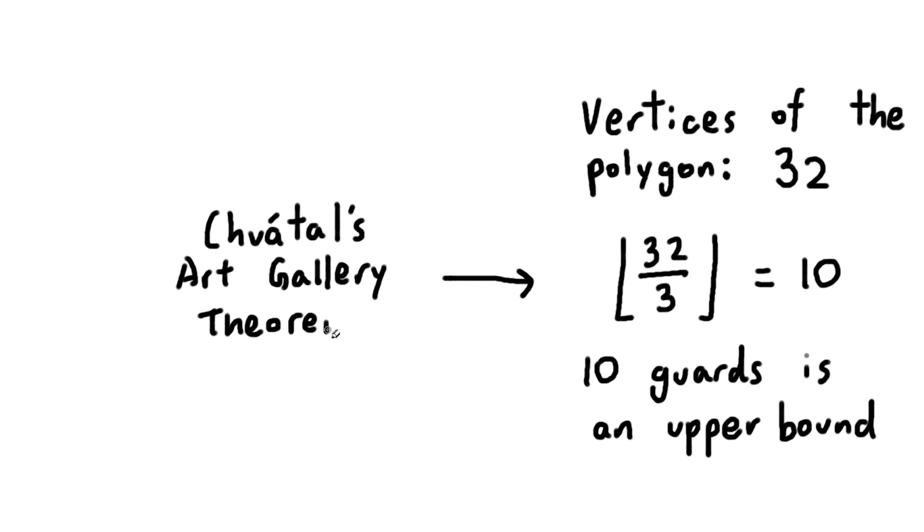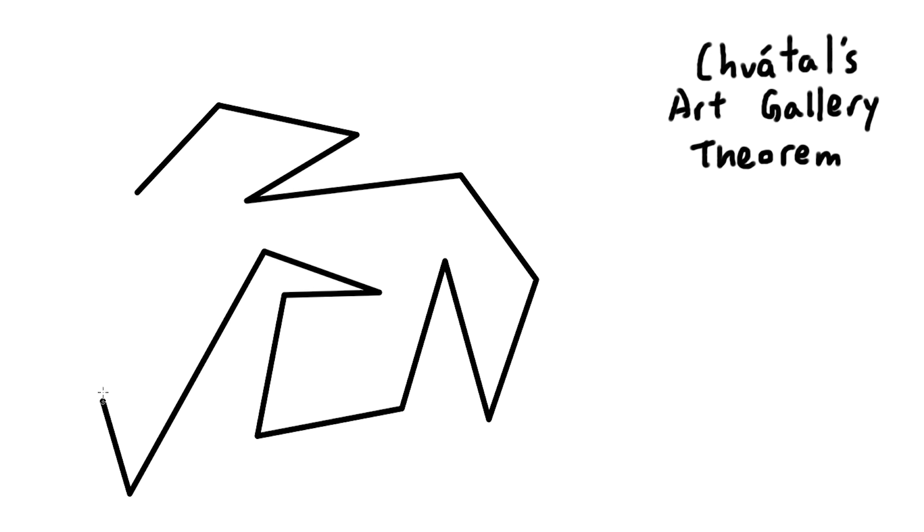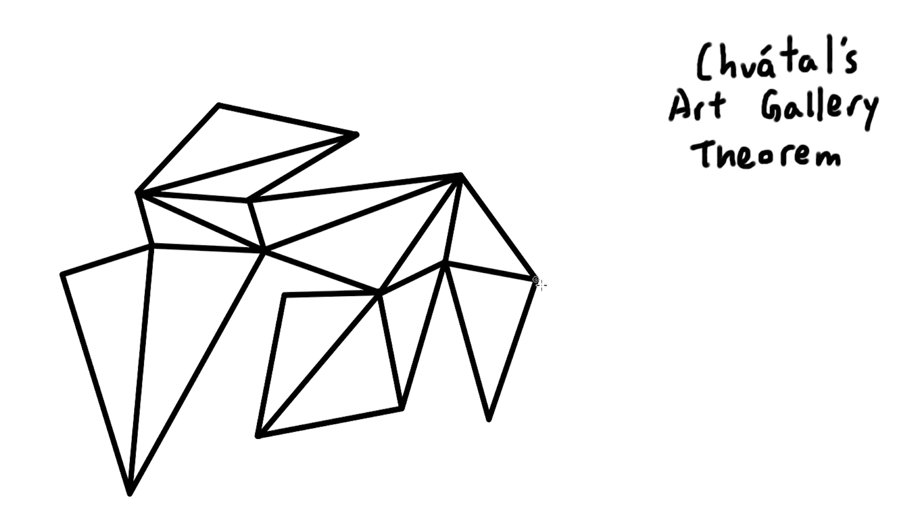Now let's see where this formula for the upper bound came from. We're going to draw another polygon to use as an example, and we're going to triangulate it. This means to divide it into triangles only, which is always possible for every polygon.